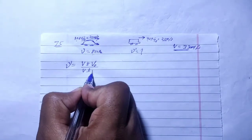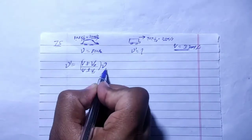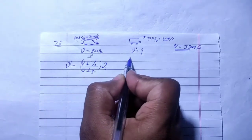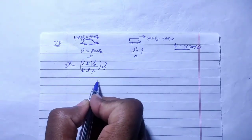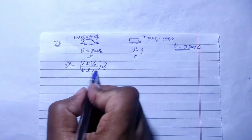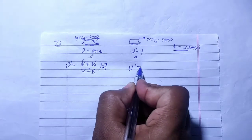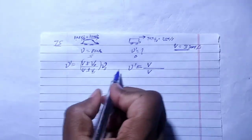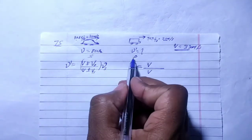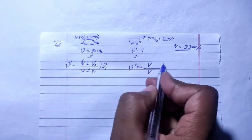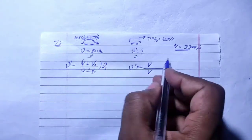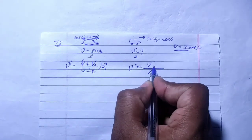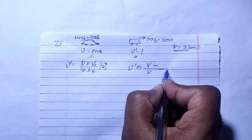Here the source is the rear car producing the frequency. The observer is the front car. Applying the formula: the apparent frequency equals V, with the observer moving away from the source — so we apply the correct sign convention based on their relative motion.